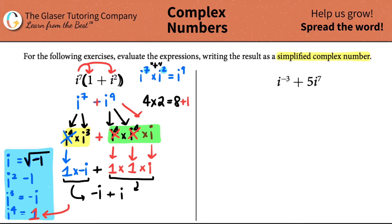So now I have negative i plus i — they cancel. Negative one plus one is zero. And that's the final answer for this one. So all that work for zero.